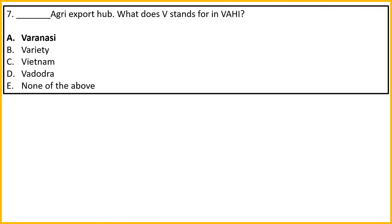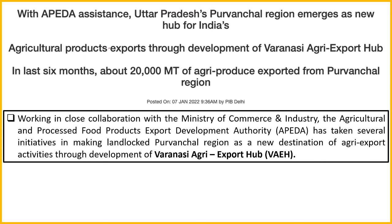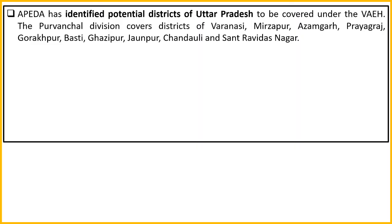Regarding VAEH - Varanasi Agriculture Export Hub - if there were questions, understand the news: In Uttar Pradesh, APEDA with assistance started the Varanasi Agriculture Export Hub to develop agricultural products for export. APEDA will work with the Ministry of Commerce and Industry to make Varanasi a destination for agricultural exports. APEDA has identified potential districts of UP including Varanasi, Mirzapur, Azamgarh, Prayagraj, Gorakhpur, Basti, Ghazipur, Jaunpur, Chandauli, and Sant Ravidas Nagar.